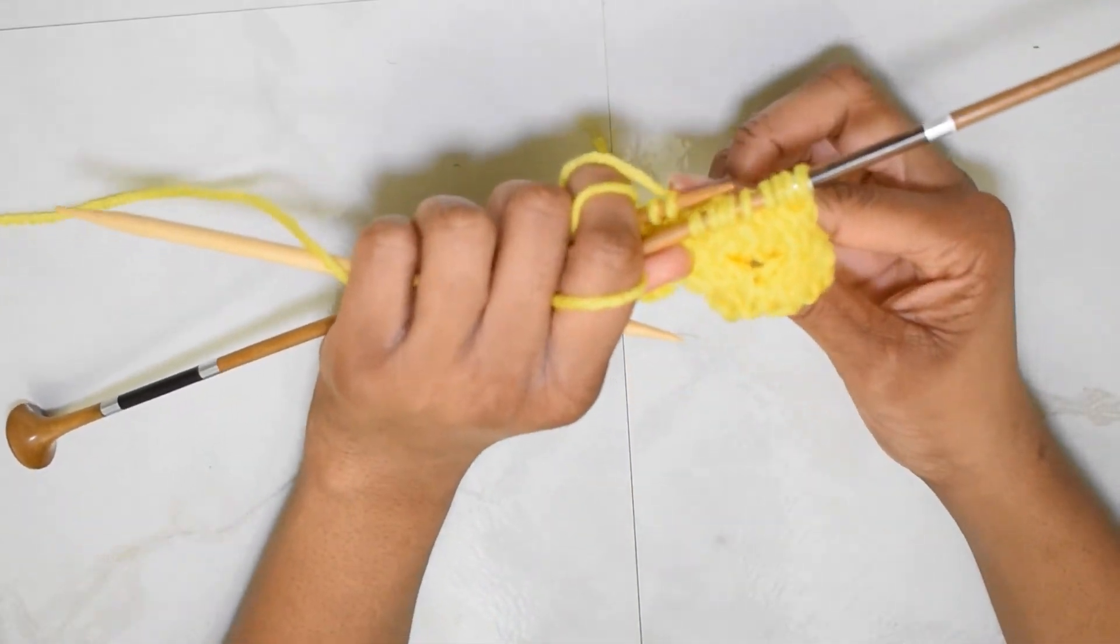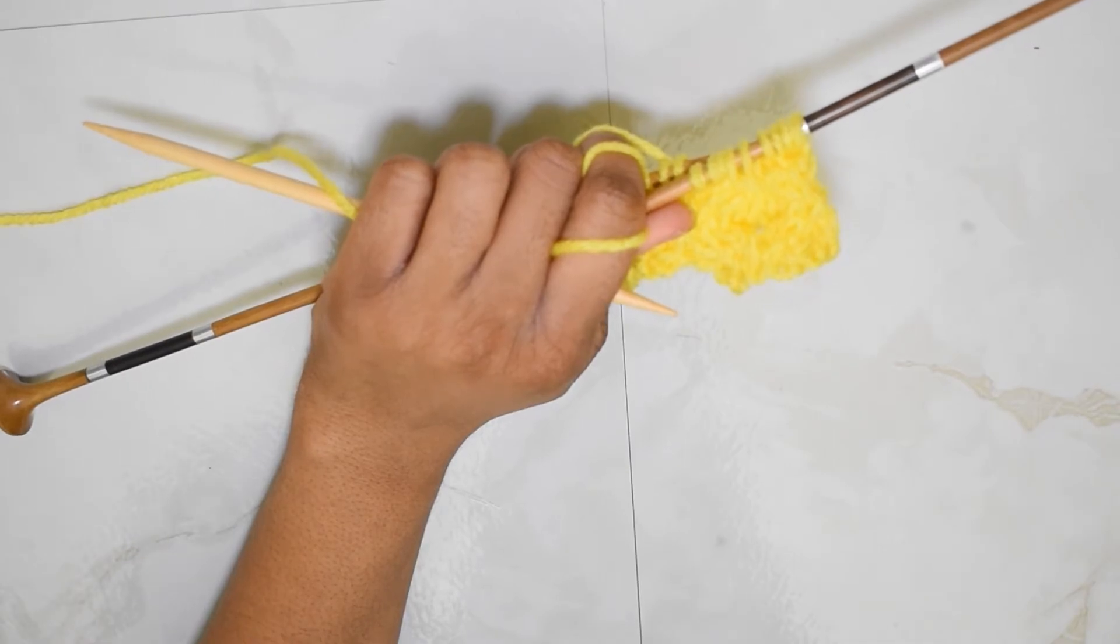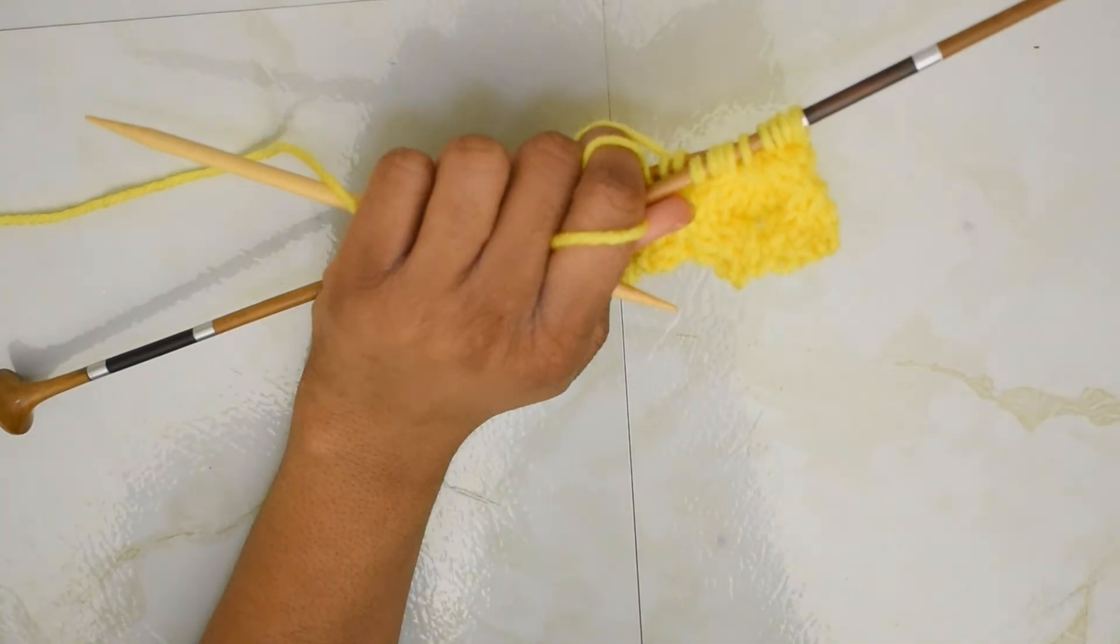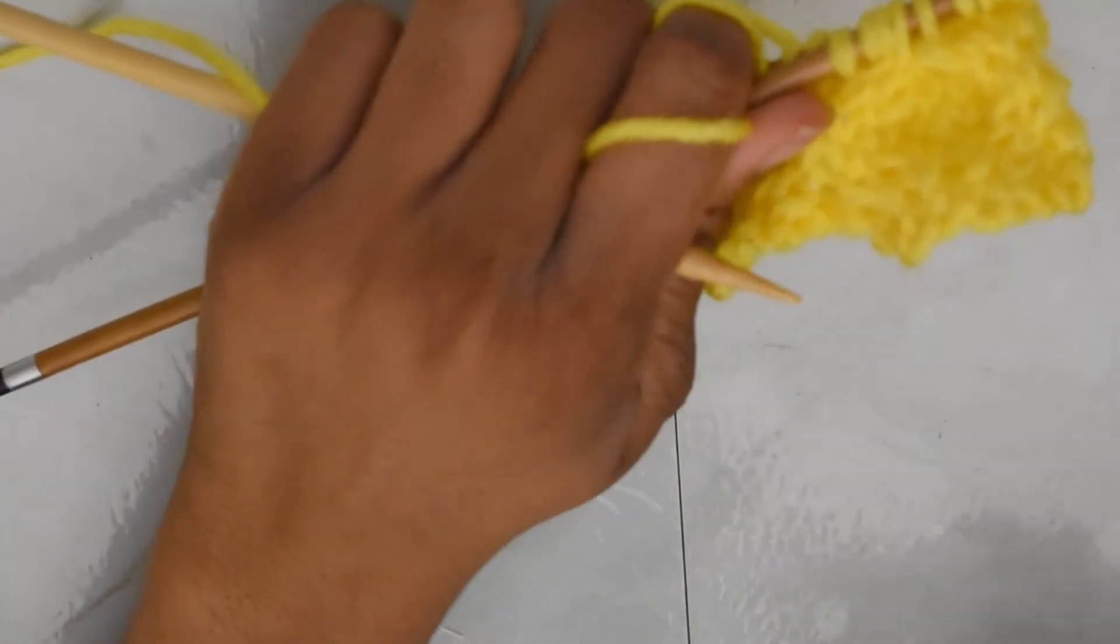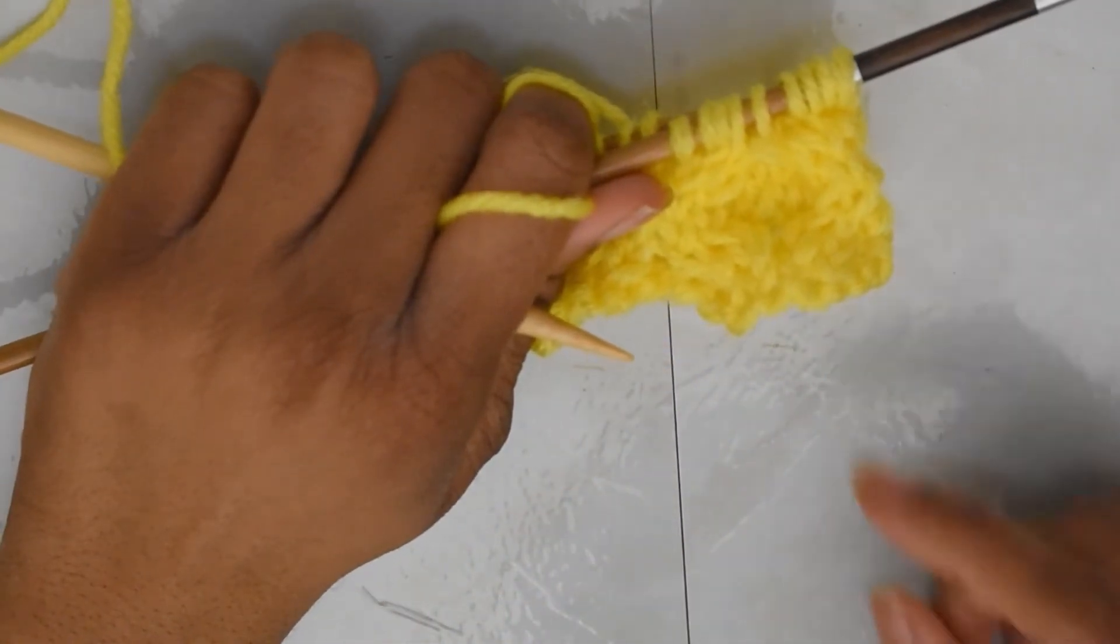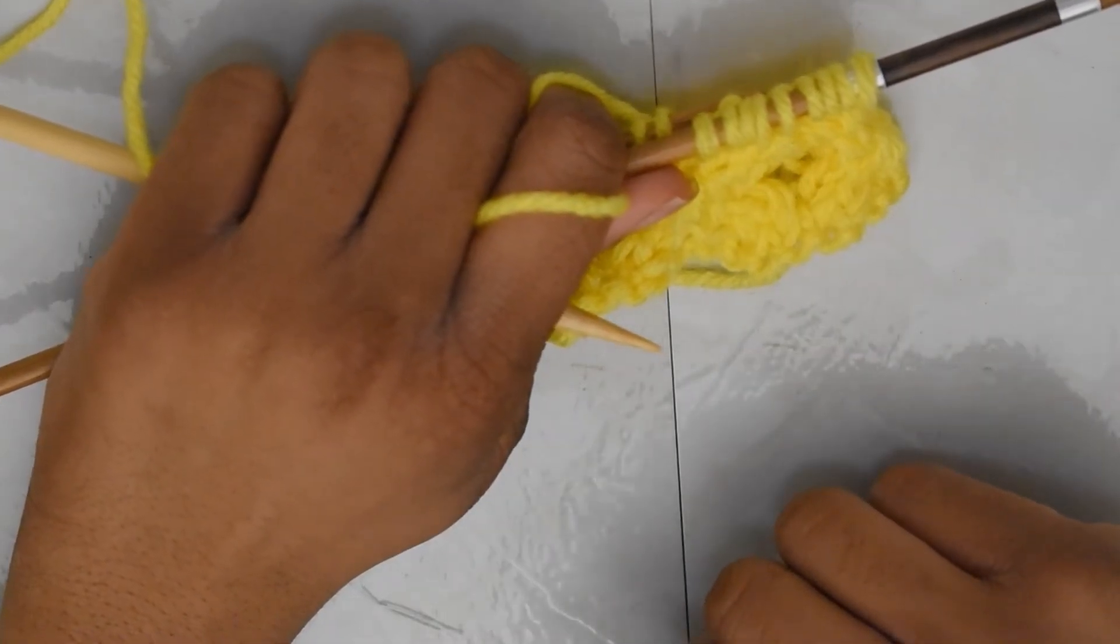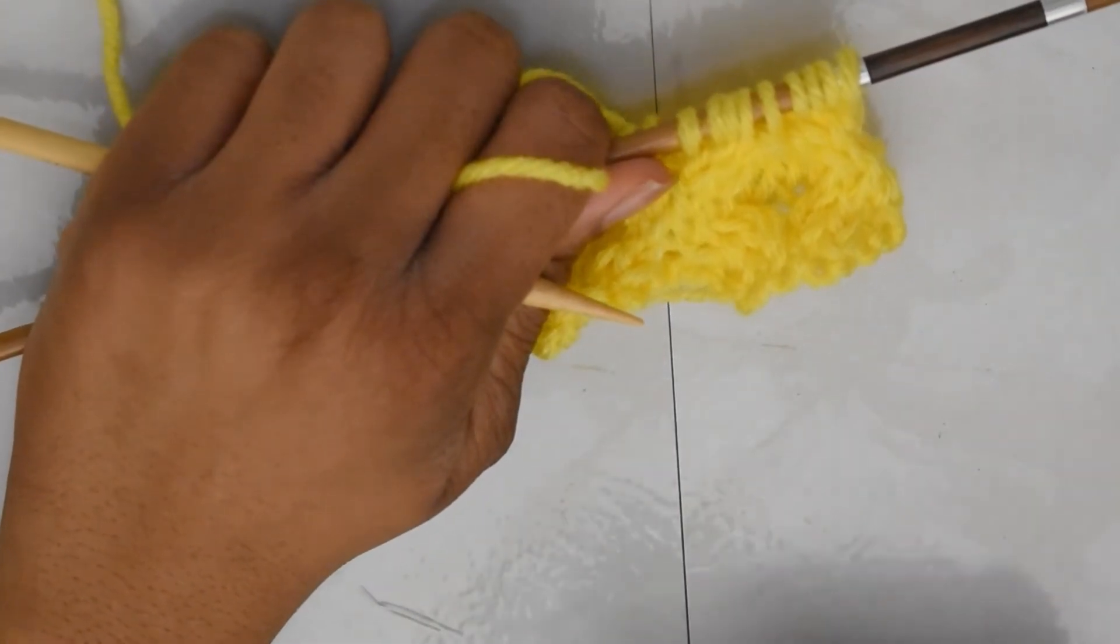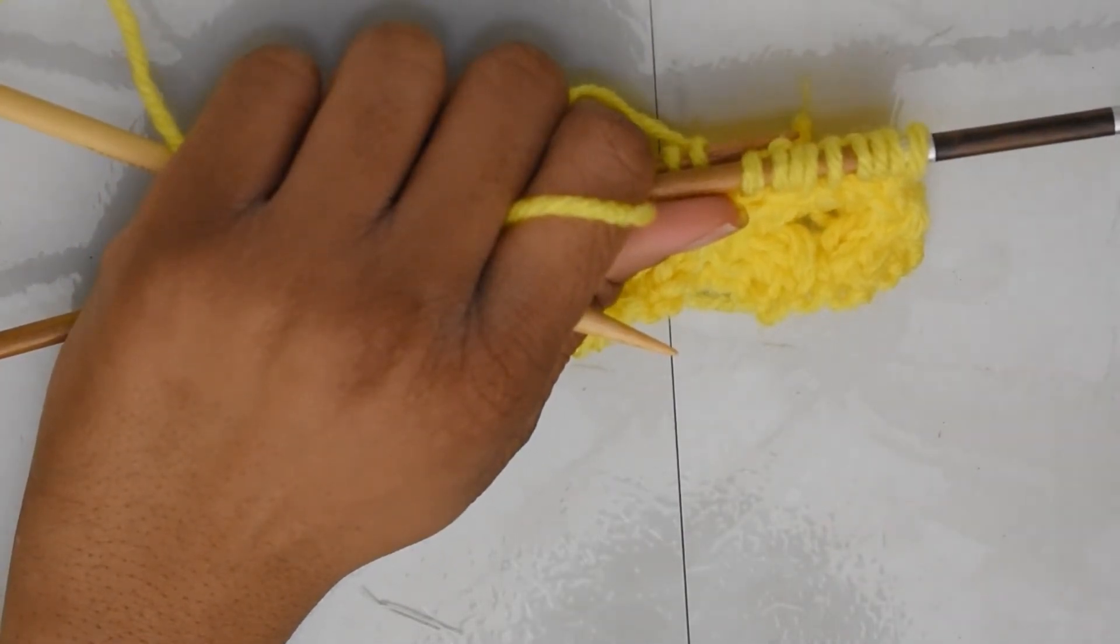And as you can see, or maybe not. Let's zoom in. As you can see, that starts to create our little wells, or our little honey cones in our pattern. So I'm going to continue on row 7, and I will come back when we are ready to move on to row 8.